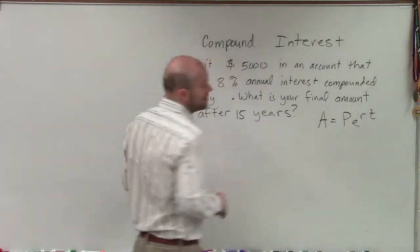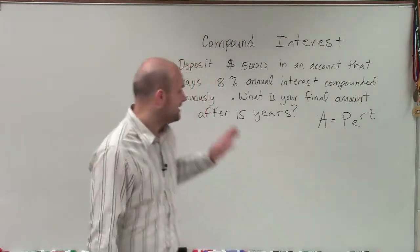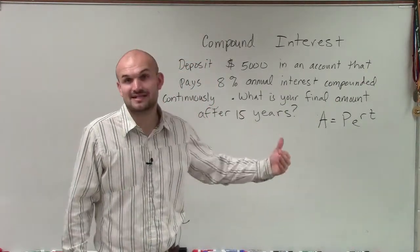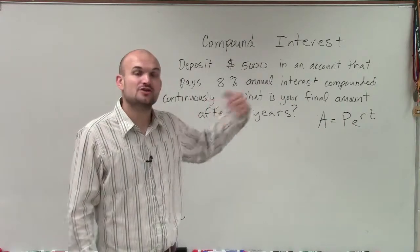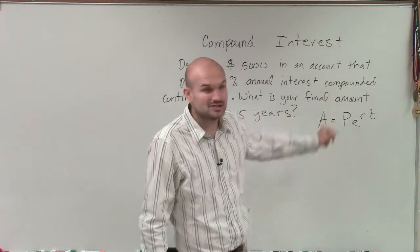And now to the continuously compounded formula, which a lot of times I just like to call PERT, because it's your principal times the constant e raised to an annual interest rate in decimal form times t, which is years.